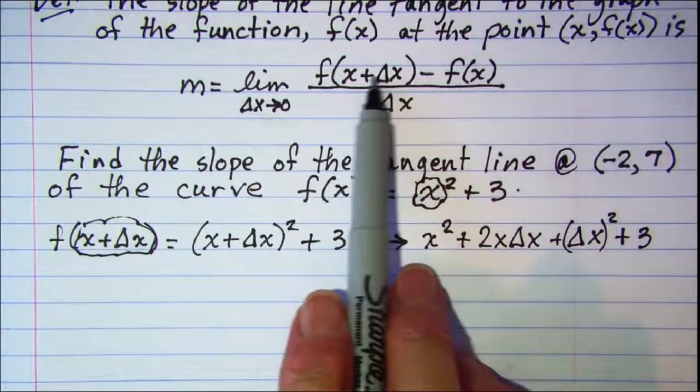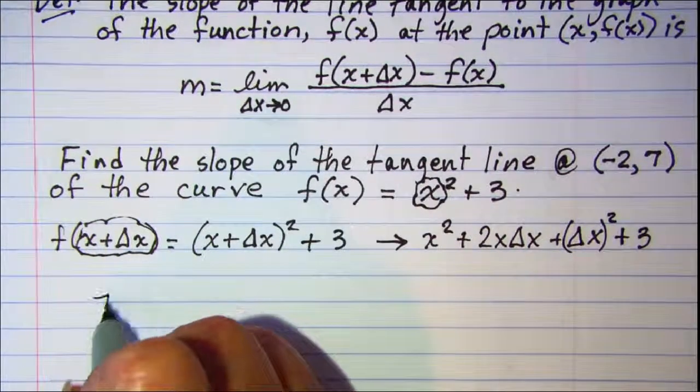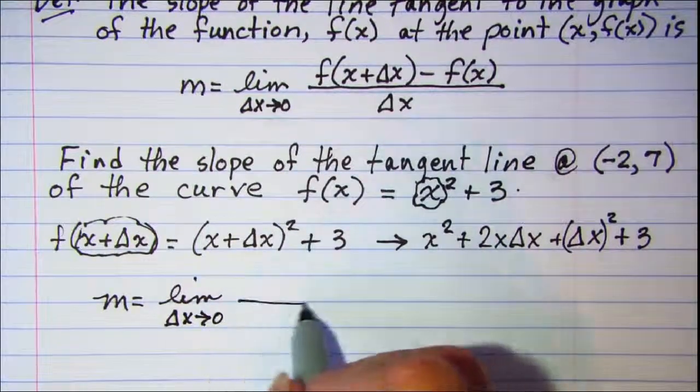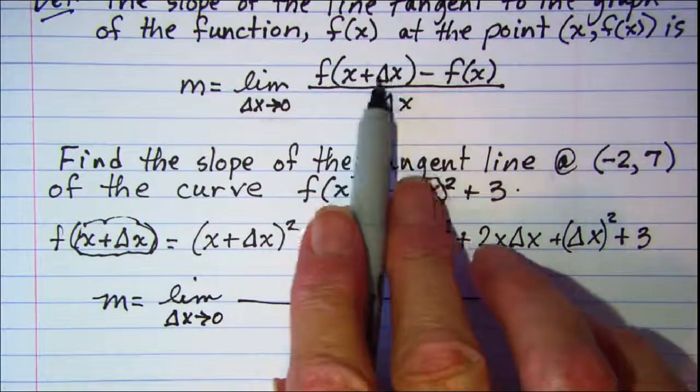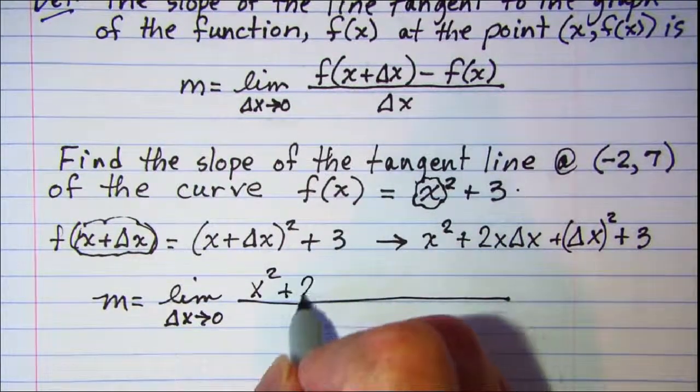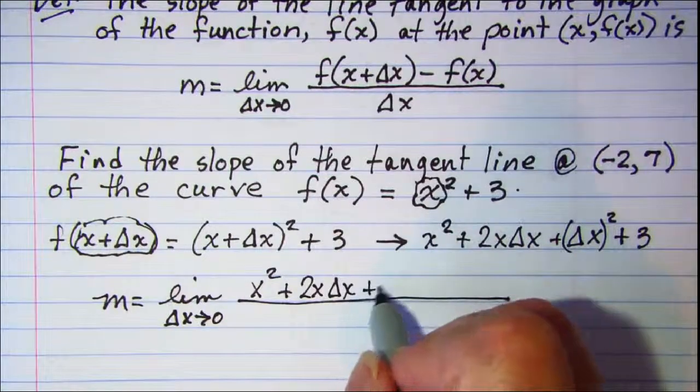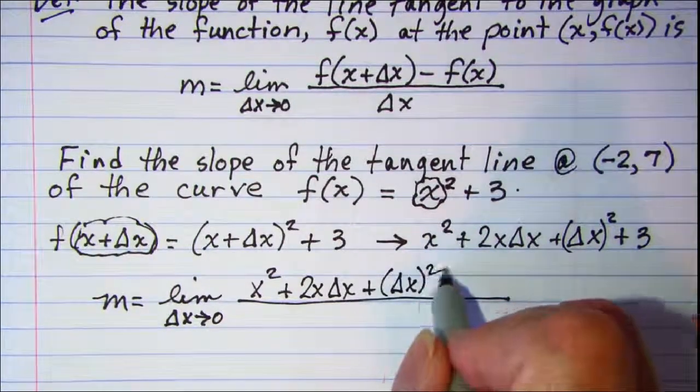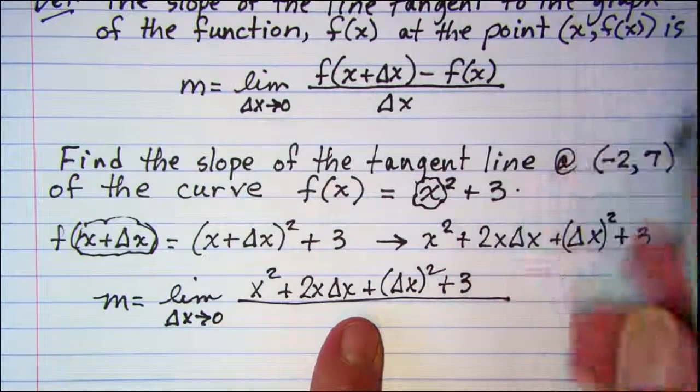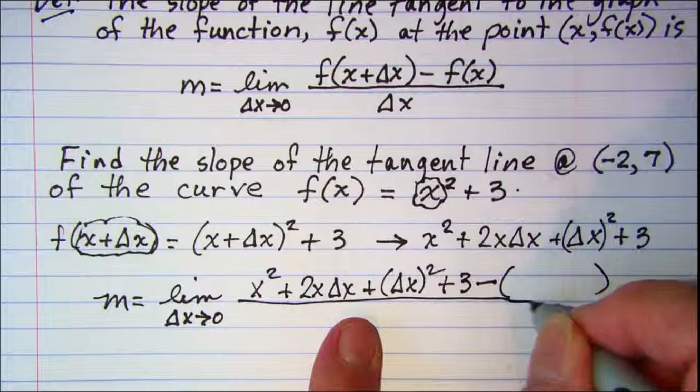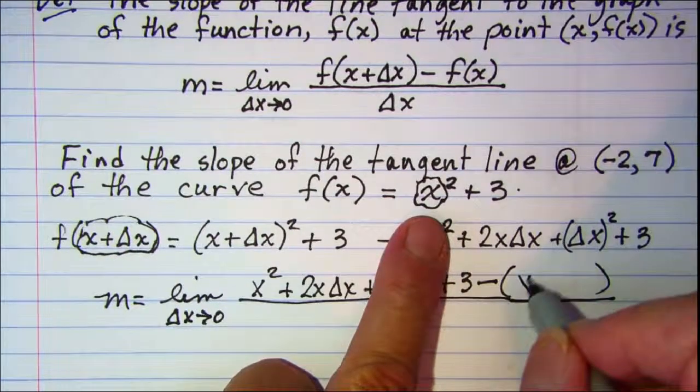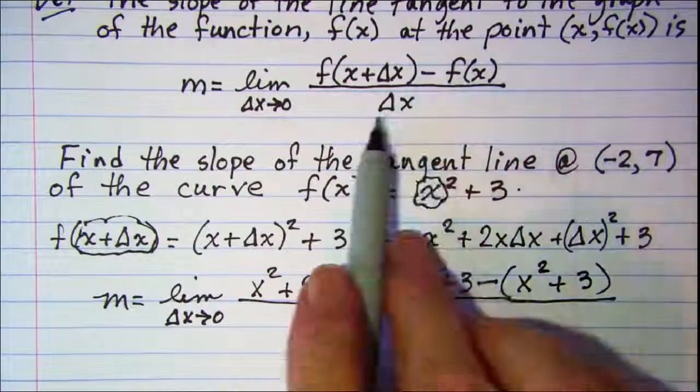So that's just this first part of the numerator. So my m is defined as the limit as Δx approaches zero of the fraction. Now let me copy this first part of this expression. So I have x² + 2xΔx + (Δx)² + 3. And then from that expression I want to subtract f(x). So I need to subtract f(x), which is x² + 3. And then I'm dividing by Δx.